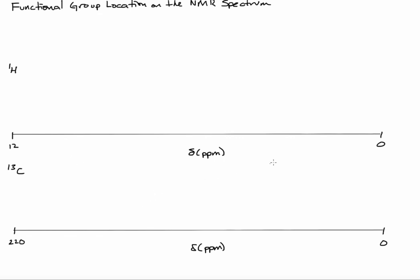So a typical spectrum will have a scale from 0 to 12 for the proton NMR. The x-axis is the Greek letter delta, which means chemical shift in units of parts per million. In C13 NMR the scale is from 0 to 220.